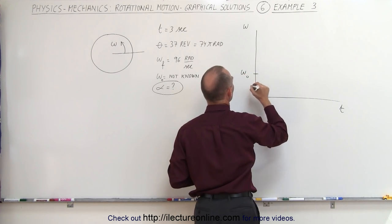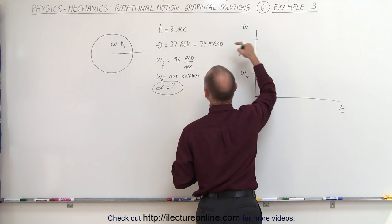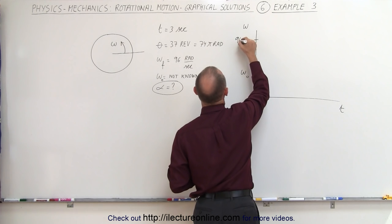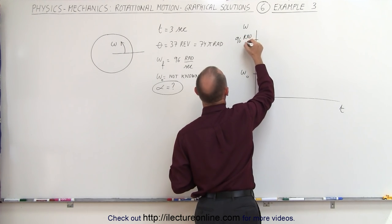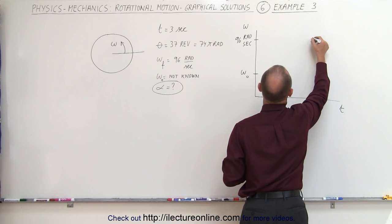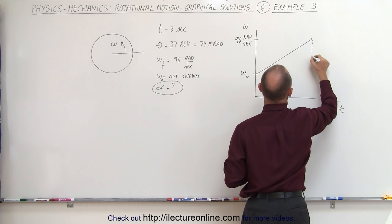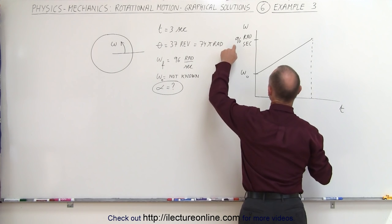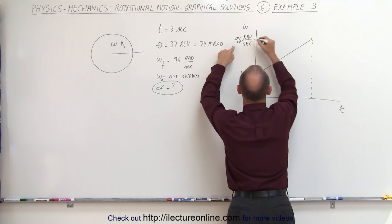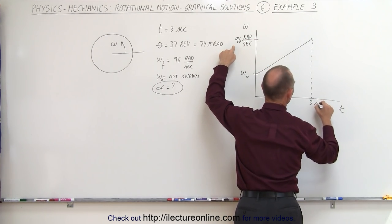We'll simply write it as initial omega and here's our final omega to be 96 radians per second. So in three seconds it went from some initial angular velocity to some final angular velocity that we know, 96 radians per second, and it did so in three seconds.